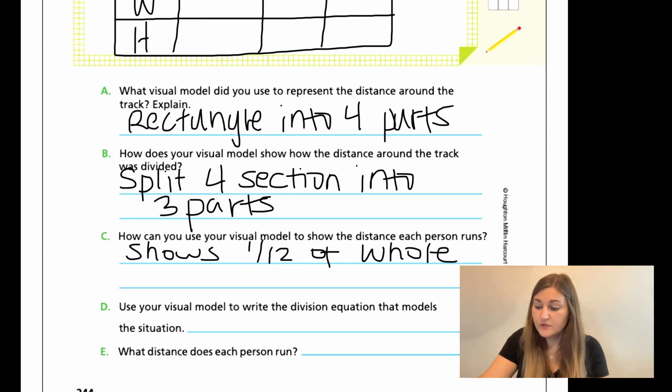Then for D, use your visual model to write the division equation that models the situation. We started with a fourth. So whatever number you start with, that needs to be your first number. So we started with a fourth and we took that fourth and we divided it into three. So we took a fourth and we divided it by three for our three friends. And that was equal to one twelfth. And we got one out of 12. So what distance does each person run? Now we just want to attach the unit to it. That was one twelfth of a mile.